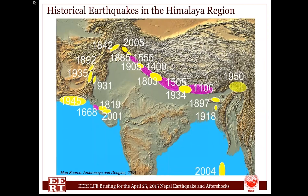In terms of the history of earthquakes in Nepal and the region, there were several large and devastating earthquakes in the history. Devastating earthquakes in the recent history in Nepal include those of 1833 and 1934.